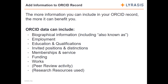The more information researchers have in their ORCID records, the more everyone will benefit. The ORCID record provides space to include biographical information, employment and education information, memberships and service, invited positions and distinctions, past funding, and works — which can be anything from publications to presentations or data sets, any kind of output. People can also have information about peer review activity they've done and research resources they have used.